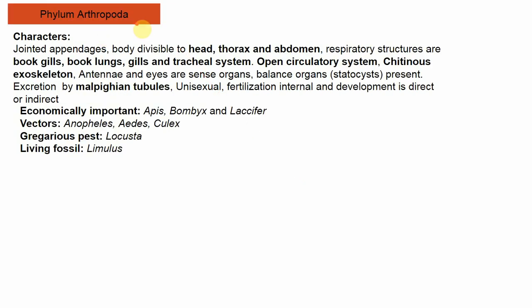The next phylum is Arthropoda, characterized by jointed appendages. The body is divisible into three regions: head, thorax, and abdomen. Respiratory structures are diverse — book gills in primitive arthropods like Limulus, book lungs in arachnids like scorpions, gills in aquatic arthropods like lobsters, and a tracheal system in insects like cockroaches. The circulatory system is of the open type. They have a chitinous exoskeleton.